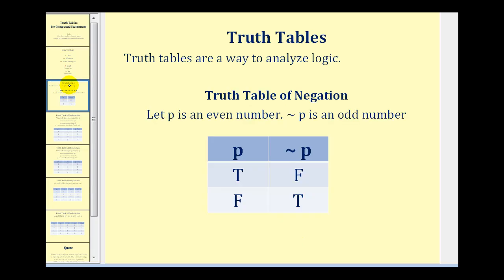Let's start by making the most basic truth table for P and not P. There are two options for P — either it's true or it's false — and two options for not P. Notice P and not P can't both be true, and they can't both be false. We can think of P as an even number and not P as an odd number: if it's true that our number is even, it's false that it's odd, and vice versa, assuming we're talking about integers.